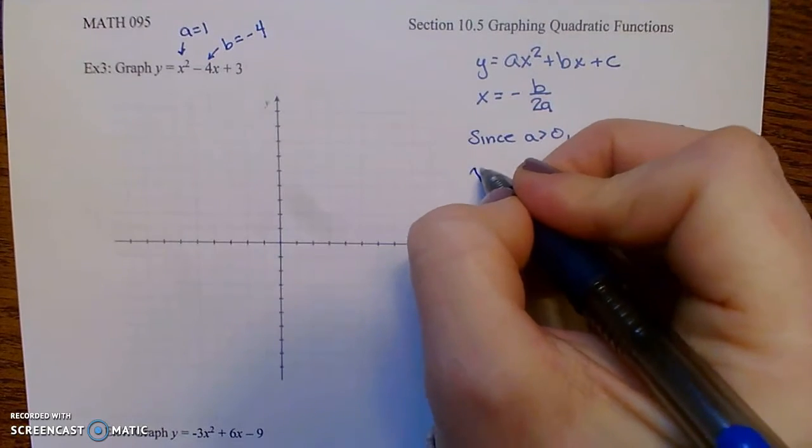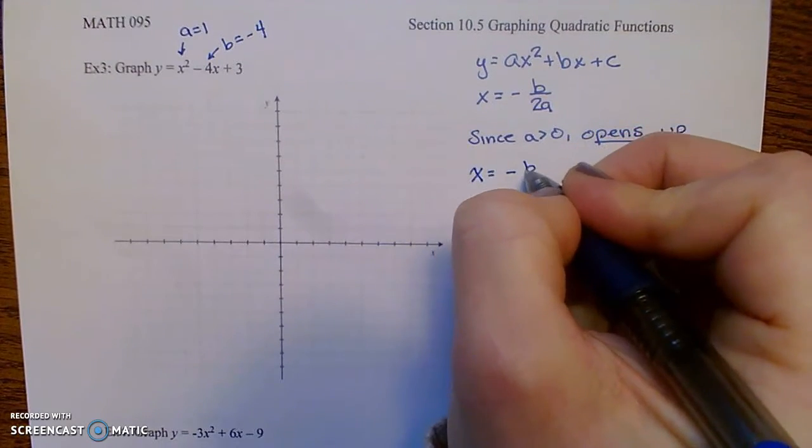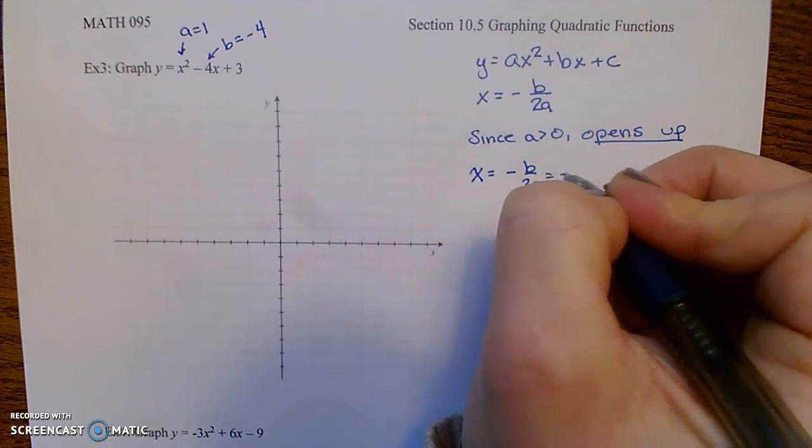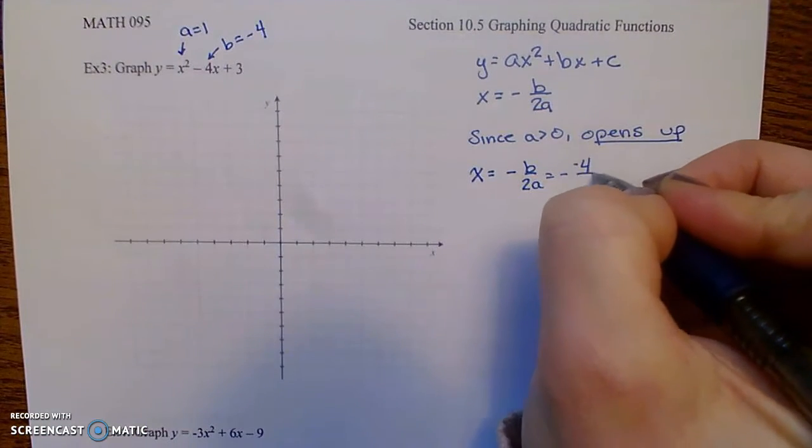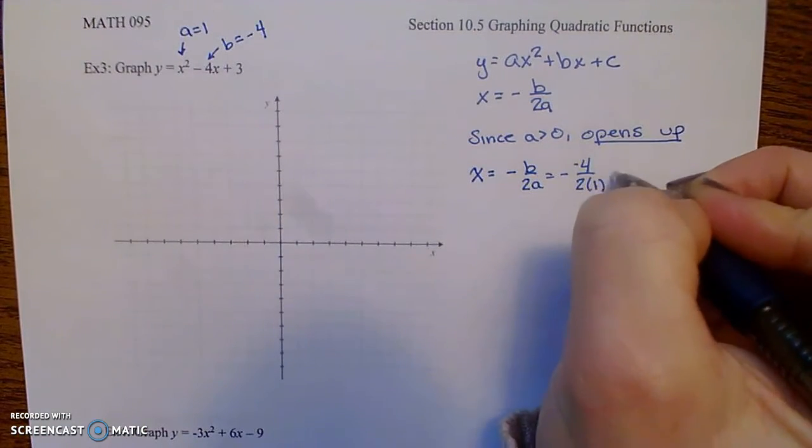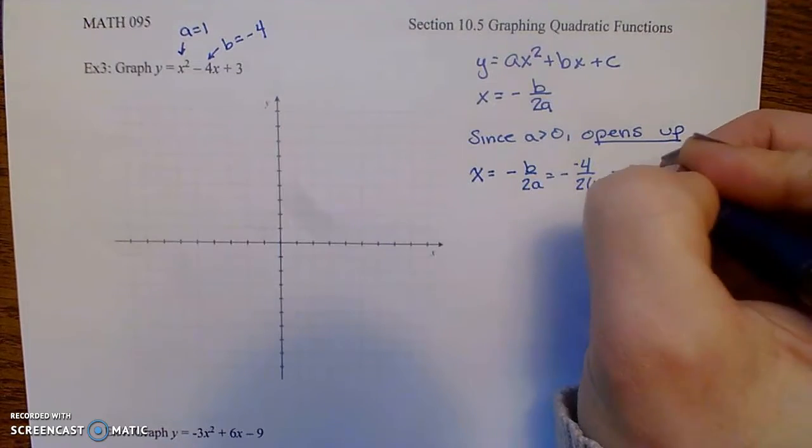Also, I can calculate the x-coordinate of the vertex. It'll be negative b over 2a. So that'll be negative b is negative 4, all over 2 times a, which is 1. So negative negative 4 over 2, which is a positive 2.